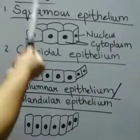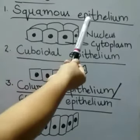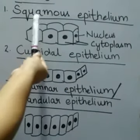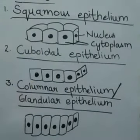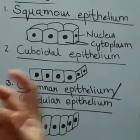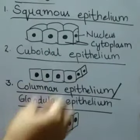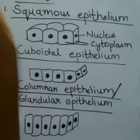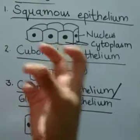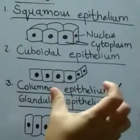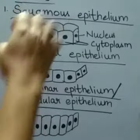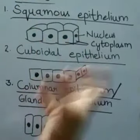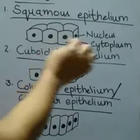The classifications are squamous, cuboidal, columnar, glandular, and ciliated epithelial tissue. Squamous epithelium — 'squamous' is actually a Latin word meaning scales — and these cells look exactly like the scales on the skin of fish, but while scales on fish are very hard, these cells are very soft.